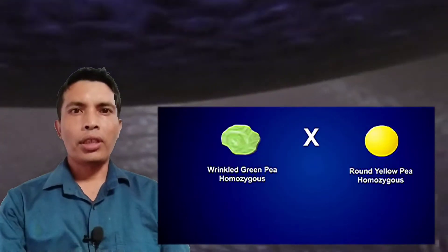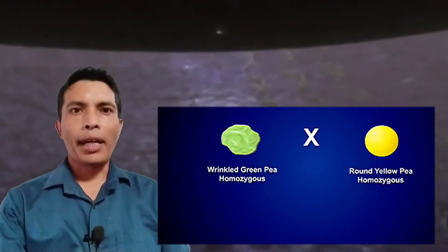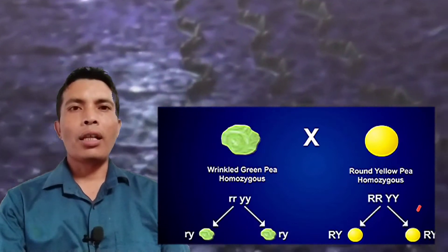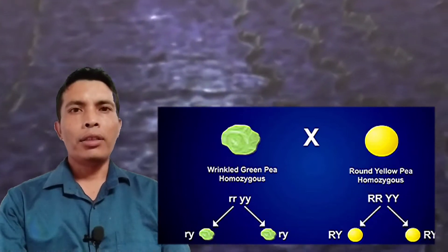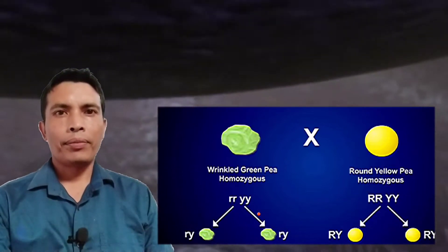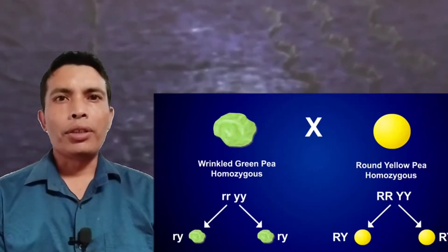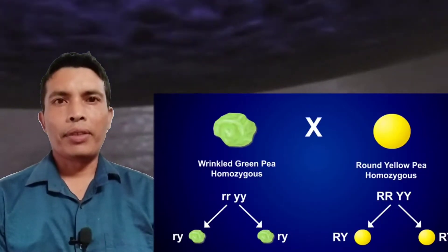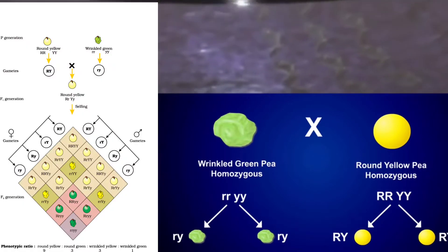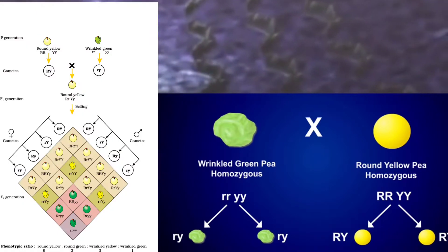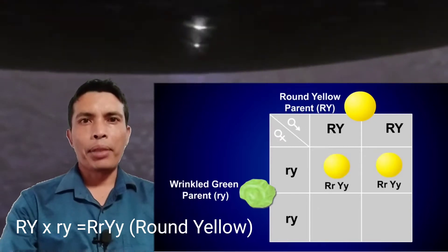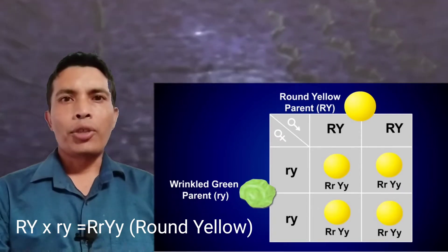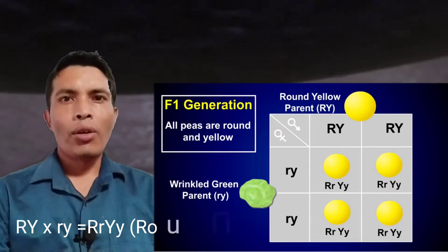The genotype of the parents can then be written as RRYY and rryy. The cross between the two plants is shown in this figure, showing the genotypes of the parent plants. The gametes RY and ry unite on fertilization to produce the F1 hybrid RrYy.